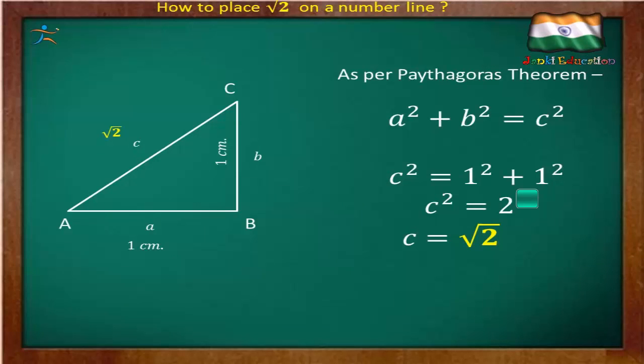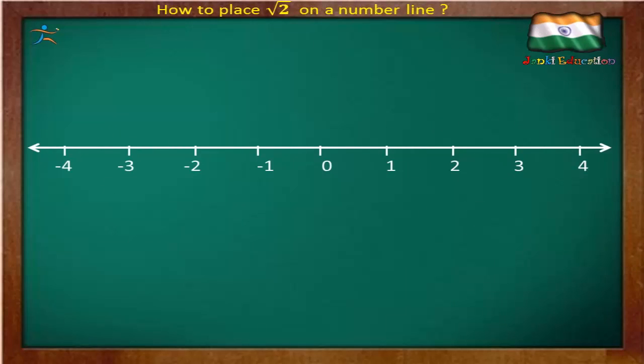Now how we will place this √2 on a number line. We first need to draw a number line. From 0 to 1 that is 1 unit. We need to take 1 unit and from number 1 we need to draw a perpendicular line with a measurement of 1 cm. We need to join both the ends and that will be our point A.